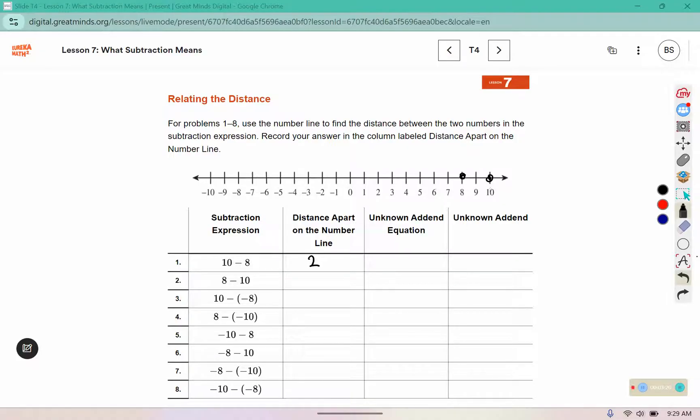8 and 10 are also 2 apart, even if we change the order of them. For 10 and negative 8, those are a lot farther. This would be 1, 2, 3, 4, 5, 6, 7, 8, 9, 10, 11, 12, 13, 14, 15, 16, 17, 18 apart.